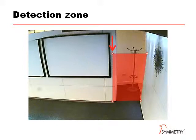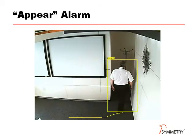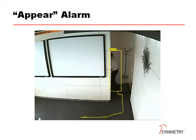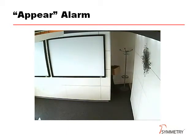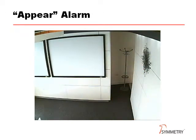We will now show a short video clip of someone entering the zone, disappearing behind the wall, then appearing again. As the analytics is configured to generate an alert on appear, the boundary box will show red, allowing the Symmetry video management software to start recording pre and post alarm video. So as the target enters the zone, we see the yellow detection box. He then disappears from the zone, and then as he reappears, the detection zone will show red and the video is recorded.